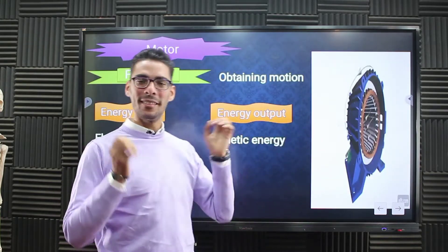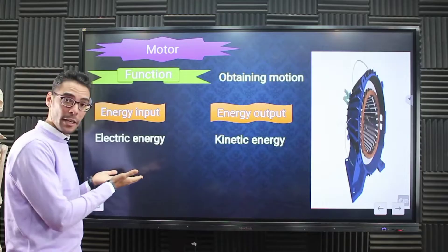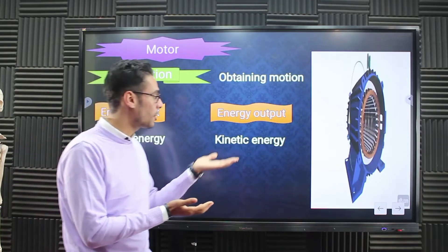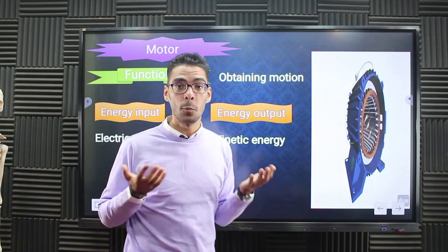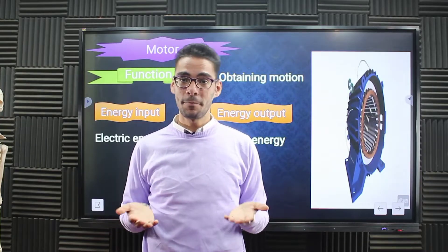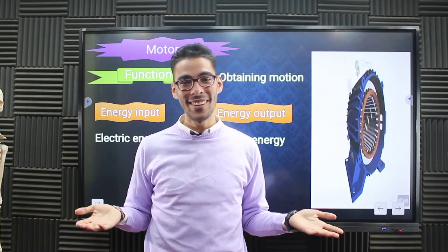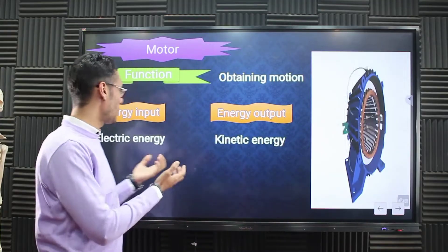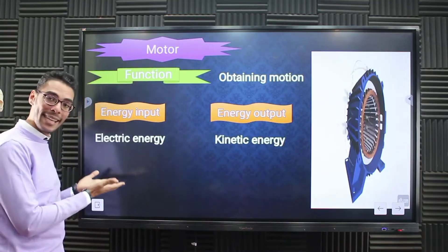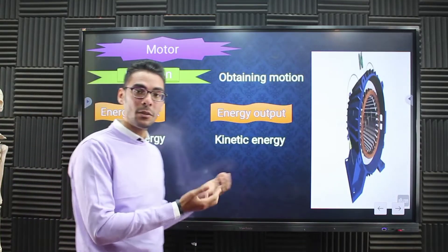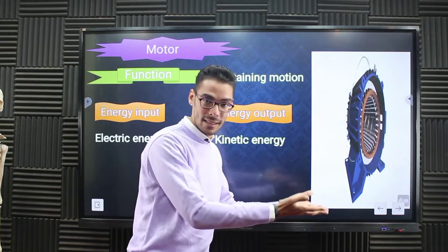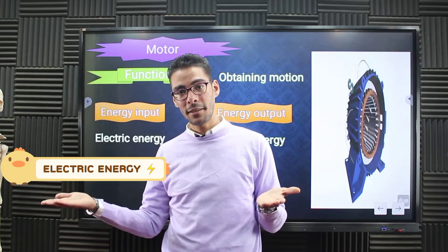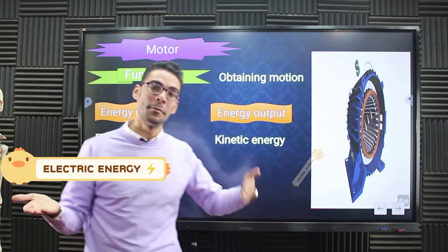The motor takes electric energy to work and converts it into kinetic energy. We can find the motor in the car — the car needs electric energy to work, so it takes electric energy and converts it into kinetic energy: the movement of the wheels. So the motor changes electric energy into kinetic energy.